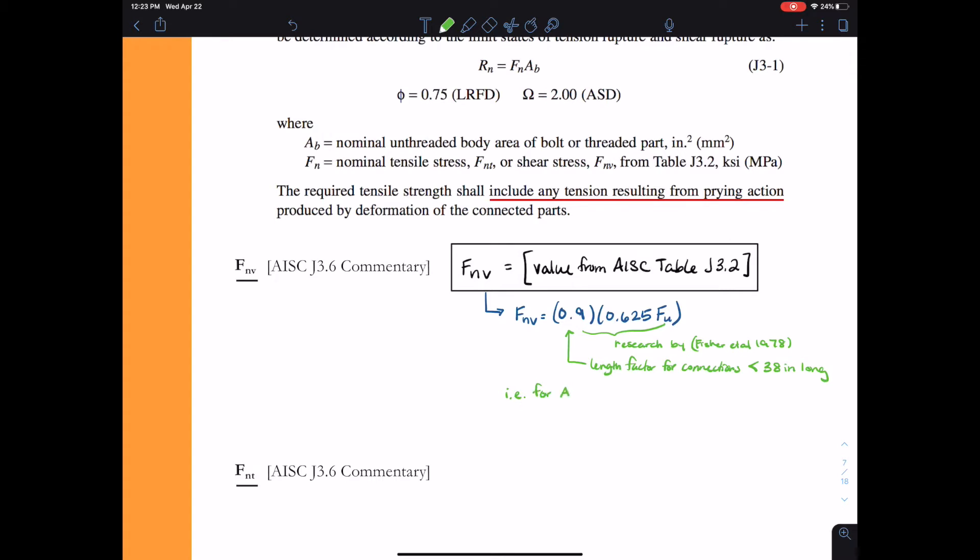So if we want to take a look at how we get these calculations for an A325 bolt—an A325 bolt has a nominal ultimate strength of 120 KSI. Our bolts are hardened steel and they have a much higher strength. They've been hardened and heat treated compared to a regular plate steel. Bolts will have a much higher strength compared to plate steel. For an A325 bolt we calculate F_NV by taking 0.9 times 0.625 times 120 KSI and that gives us 67.5 KSI. If we compare this to the value that we get from table J3.2, we would find that the value from the table is 68 KSI. They've gone ahead and rounded this up to the nearest integer.